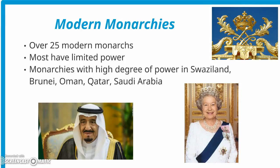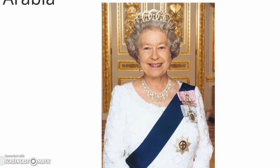There are over 25 modern monarchs, and most have limited power. Monarchies with a high degree of power exist in Swaziland, Brunei, Oman, Qatar, and Saudi Arabia. Here's a picture of the King of Saudi Arabia and the Queen of England.